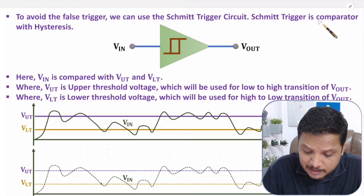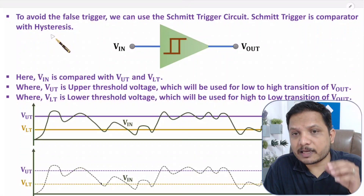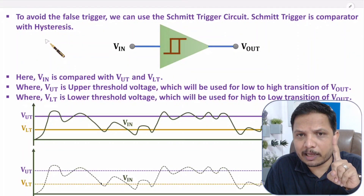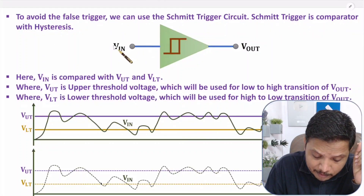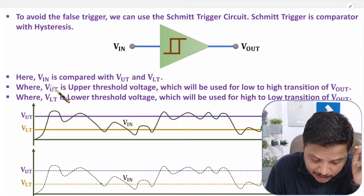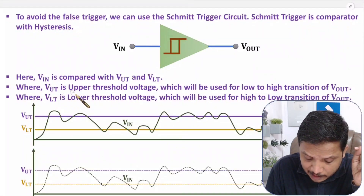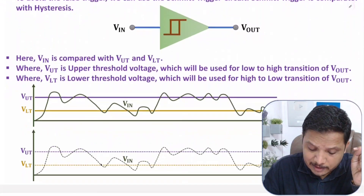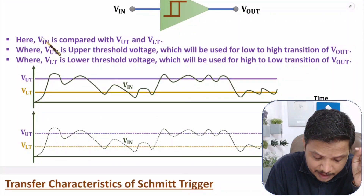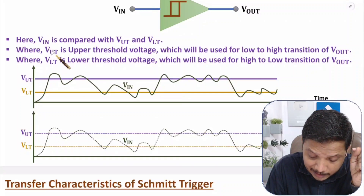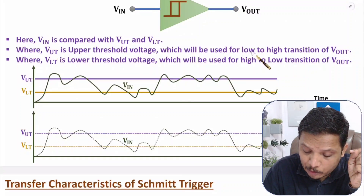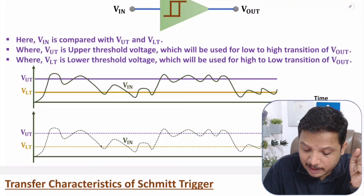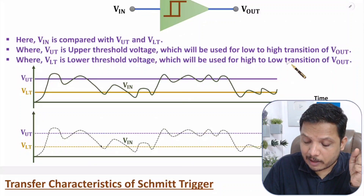Schmitt trigger circuit is a comparator with hysteresis. In a comparator, we compare the input signal with one reference voltage level only. But with Schmitt trigger, we compare VIN with VUT (upper threshold voltage) and VLT (lower threshold voltage). If VIN is greater than VUT, there is a transition from low to high. If VIN goes below VLT, there will be a transition from high to low at the output side.